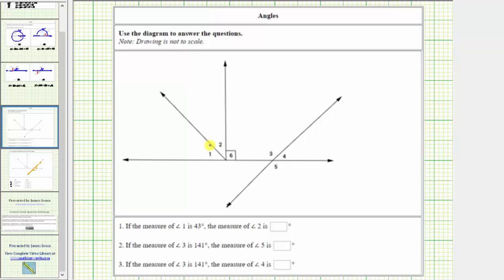Here is angle 1 in the diagram. This angle measures 43 degrees. And here's angle 2 in the diagram, which we're asked to determine the measure of.